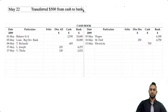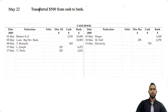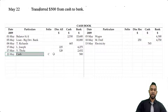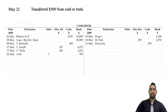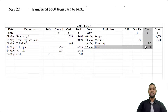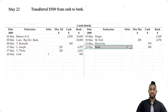On the 22nd, we transferred $500 from cash to bank. This is a contra entry — money is moving between cash and bank. Since bank is increasing, to record an increase in an asset, you debit the asset account. So on the debit side under the bank column, you see the $500 figure, with a C in the folio column meaning contra entry. On the credit side, you also show that same $500 coming out of cash — crediting cash because the asset is decreasing — also marked with a C for contra.